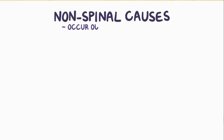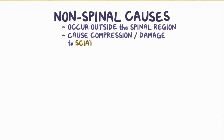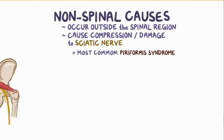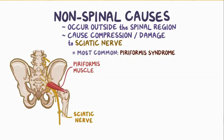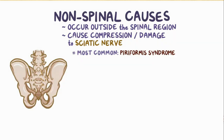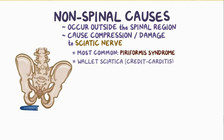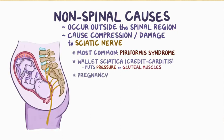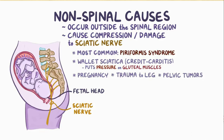Non-spinal causes occur outside the spinal region and compress or damage the sciatic nerve directly. The most common is piriformis syndrome — the piriformis muscle and sciatic nerve are very close, so irritation of the piriformis can cause muscle inflammation or spasms that compress the nerve. A more recent phenomenon is wallet sciatica or credit carditis: objects carried in back pockets put pressure on the gluteal muscles when sitting, compressing the sciatic nerve. Pregnancy is another cause — when sitting, the fetal head presses on the sciatic nerve just before it exits the pelvis. Other non-spinal causes include trauma to the leg and pelvic tumors.